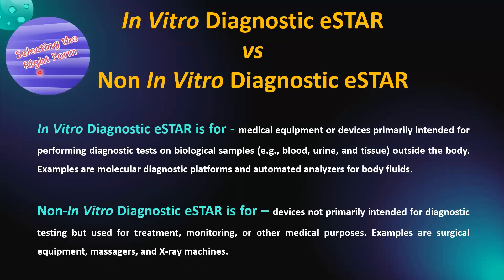To initiate the process, selection of the right form is very important. The in-vitro diagnostic eStar PDF form is for medical equipment or devices primarily intended for performing diagnostic tests on biological samples like blood, urine, and tissue outside the body. Examples are molecular diagnostic platforms and automated analyzers for body fluids. The non-in-vitro diagnostic eStar is for devices not primarily intended for diagnostic testing but used for treatment, monitoring, or other medical purposes. Examples are surgical equipment, massagers, and X-ray machines.